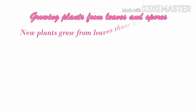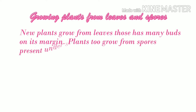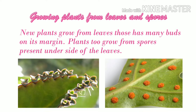Growing plants from leaves and spores. New plants grow from leaves. Bryophyllum has many buds on its margin. Plants also grow from spores present on the underside of leaves. Adventitious roots arise from the notches present at the margins of the leaf of bryophyllum, and ferns grow from spores present on the underside of the leaf.